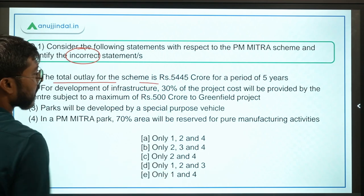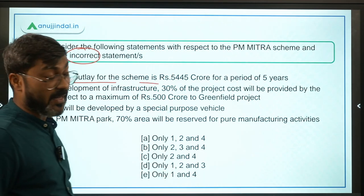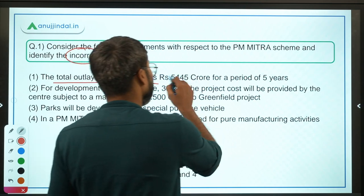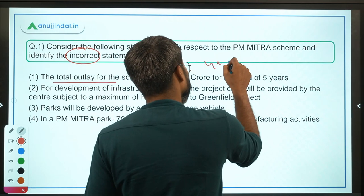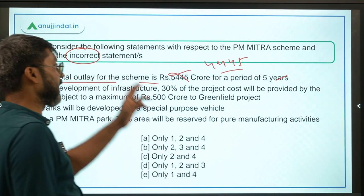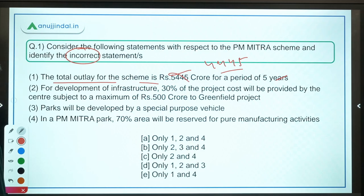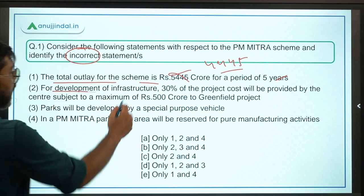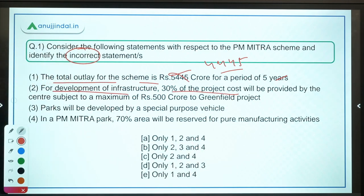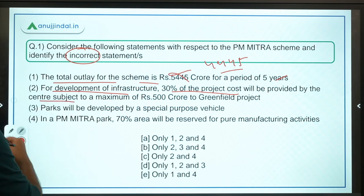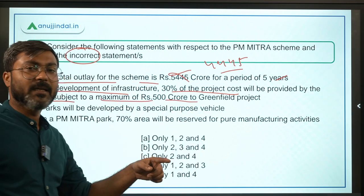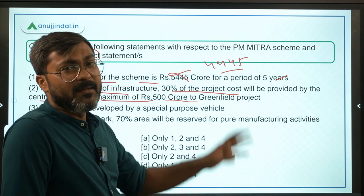Coming back to the question — you have to identify the incorrect statement. Statement: the total outlay for the scheme is 5,445 crore. That is incorrect — it is 4,445 crore for a period of 5 years. For development of infrastructure, 30% of the project cost will be provided by the centre subject to a maximum of 500 crore in greenfield and 200 crore in brownfield — that is correct. Parks will be developed by SPV — correct.